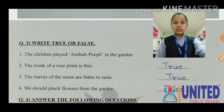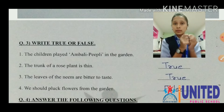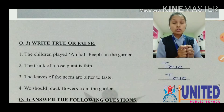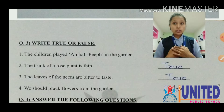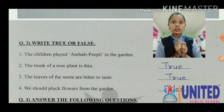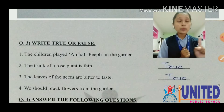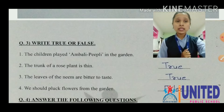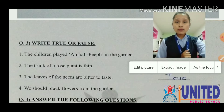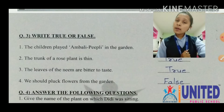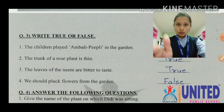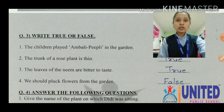Number four: we should pluck flowers from the garden. Pluck means todna. We should pluck flowers from the garden — true or false? False. It is bad manners. You should not pluck flowers from the garden. Number four is completed and we have completed question number three.